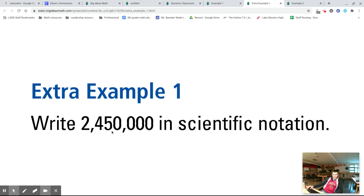1, 2, 3, 4, 5, 6 places over. So this would be 2.45 times 10 to the 6 power. That would be writing this number in scientific notation.